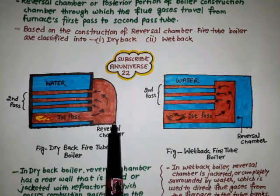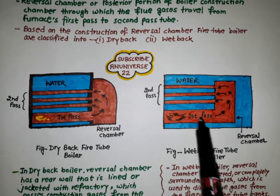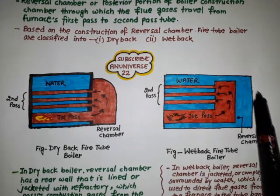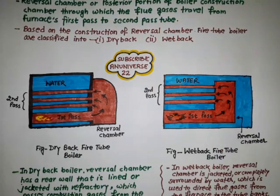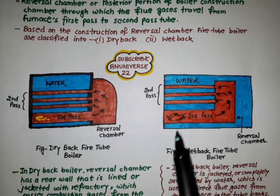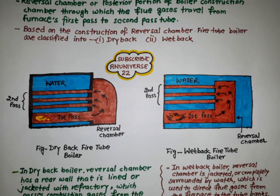Here we can see the key difference in the diagram: the reversible chamber is not surrounded by water in the dry back fire tube boiler, but in the wet back fire tube boiler the whole portion is surrounded by water. The blue color indicates the water surrounding all parts of the wet back fire tube boiler. The reversible chamber is completely surrounded by water and is used to direct flue gases from the furnace to the tube banks. The surrounding water absorbs the burner heat, helping to improve operating efficiency, as heat from combustion goes directly into evenly heating the water instead of the refractory.